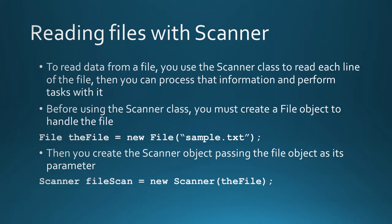Before using the Scanner class you must first create a File object to handle the file. So File, theFile, gets the value of new File and then you enter the file's name. Notice in this example it says sample.txt. To be able to just put the file name, that file must be in the same location as where the SRC folder is in NetBeans. If the file is not at the same level as the SRC folder, you need to put the entire path of the file. After you create the File object, you can create the Scanner object by passing the File object as its parameter — so Scanner, fileScan, gets the value of new Scanner and the file.